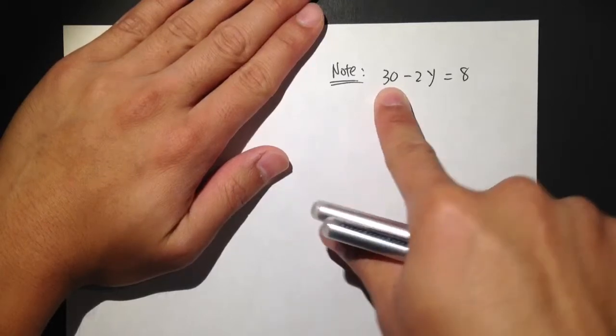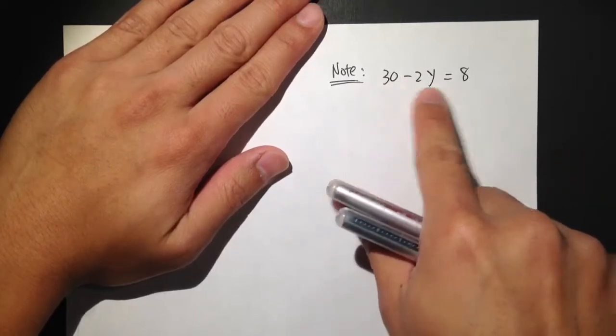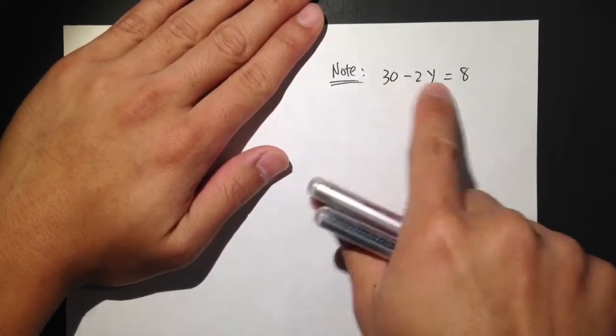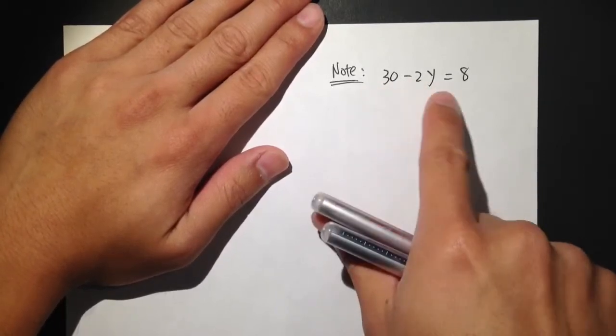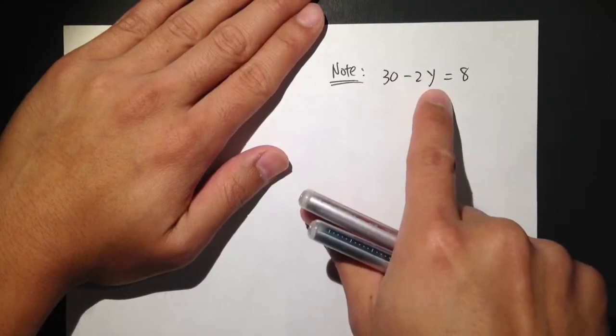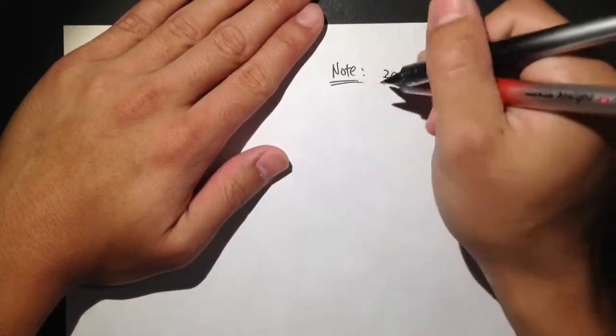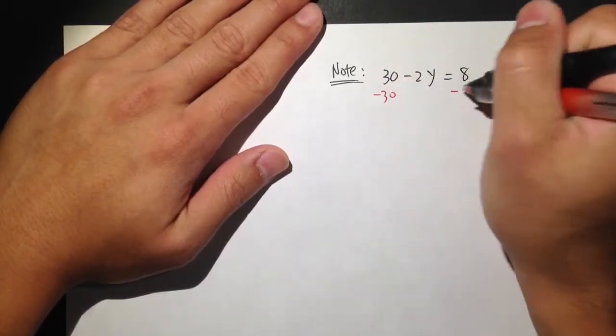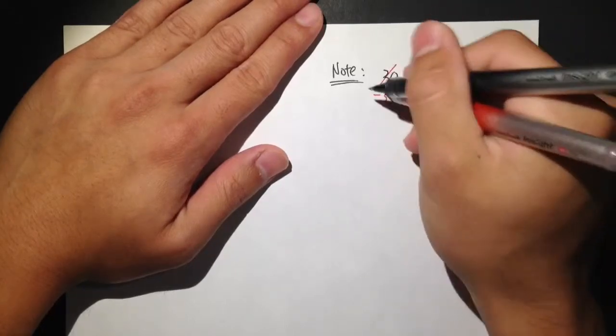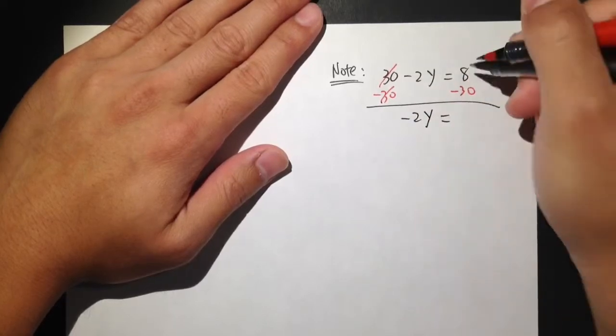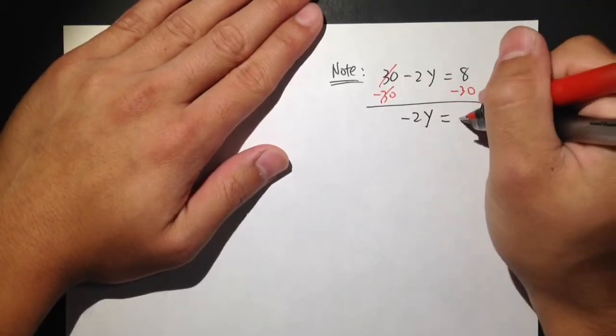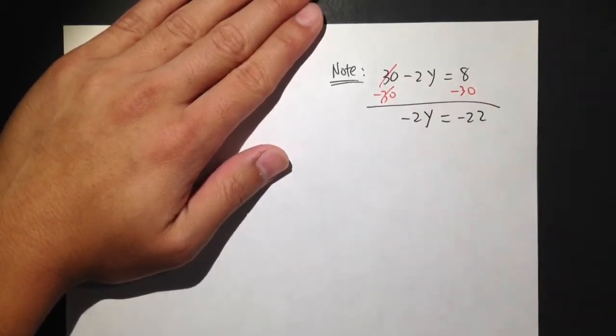You see that 30 is just a number, but 2y has a variable, right? They are two different terms. They are not like terms. And we cannot combine two different terms. What you want to do is minus the 30 first. And the 30 cancels out. We end up with negative 2y is equal to 8 minus 30 is negative 22.